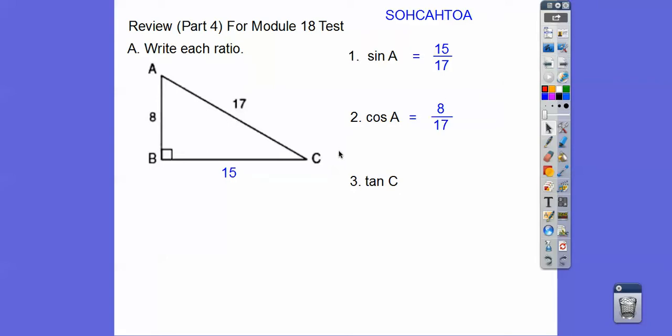And then the tangent of C. Tangent is taking old apples, opposite over adjacent. So it's not using the hypotenuse. So here's C, so opposite over adjacent is 8 over 15.